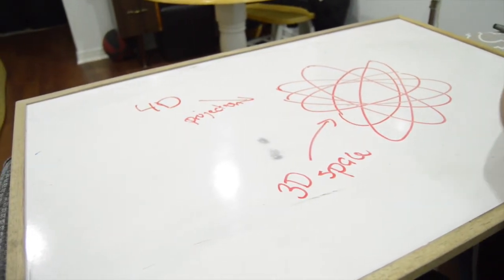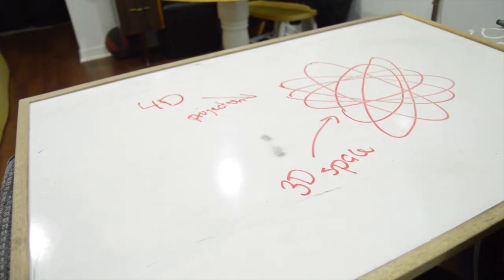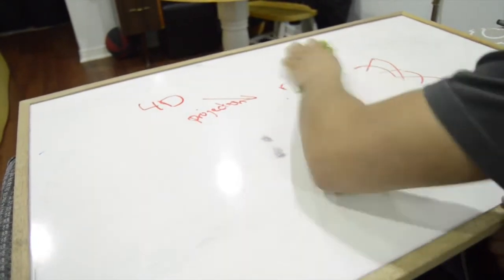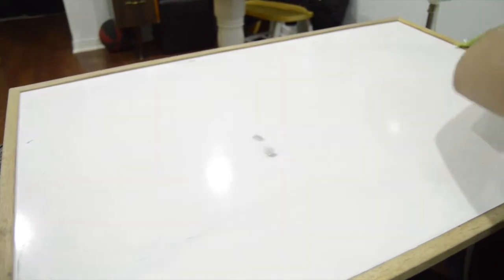And there you have it. That is the projection of a four-dimensional root system, B4, onto a 3D space.